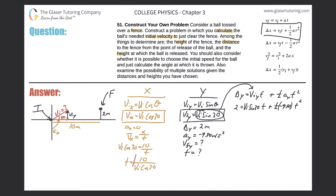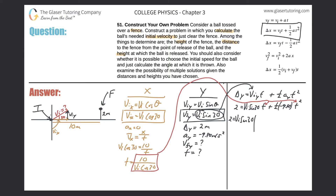Now I want to combine the two formulas. I take the time value solved from the x dimension — which is t equals 10 over (initial velocity times cosine 30) — and plug it in for time in the y equation. So: 2 equals initial velocity times sine of 30 times [10 over (initial velocity times cosine of 30)], plus one half times negative 9.80 times [10 over (initial velocity times cosine 30)] squared. The initial velocities cancel in the first term.